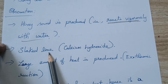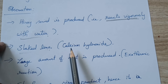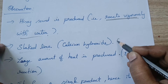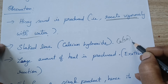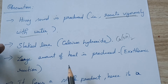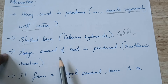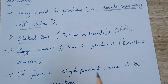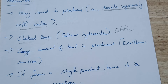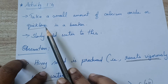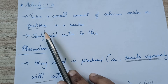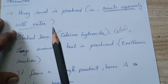The product formed is slaked lime, which is the common name for calcium hydroxide, Ca(OH)2. Along with this, a large amount of heat is produced. If you touch the beaker after adding the quicklime to water, you can feel the heat. That's why it is called quicklime — because it immediately and vigorously reacts with water.